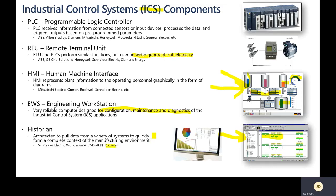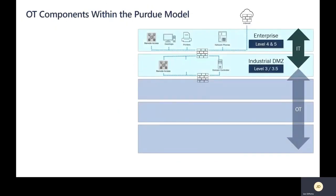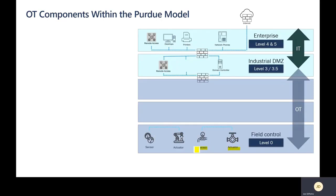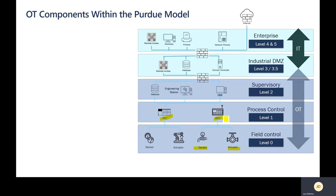Now, going back to our network diagram, let's place these control systems in the right layer within the Purdue model. At level zero, you have actuators and sensors — the field control components. At the process layer, level one, this is where PLCs and RTUs reside. At the supervisory layer, level two, you have your HMI, engineering workstation, and historian. This provides different visibility depending on which layer of the OT network you're in within the Purdue model.